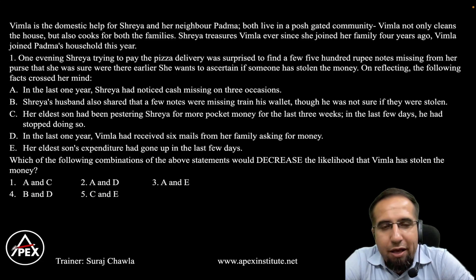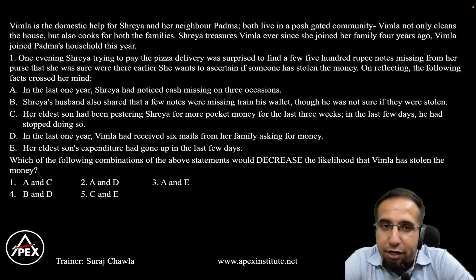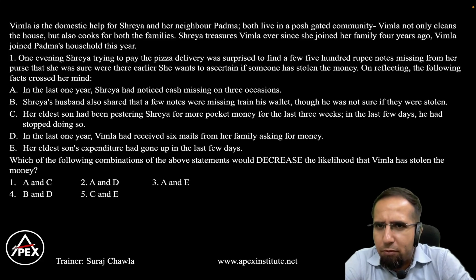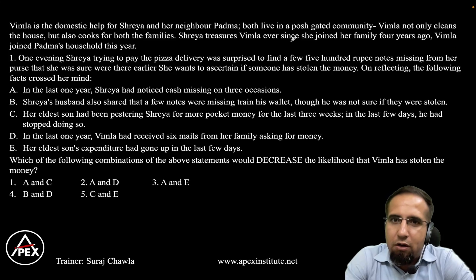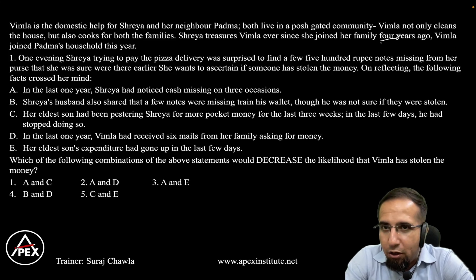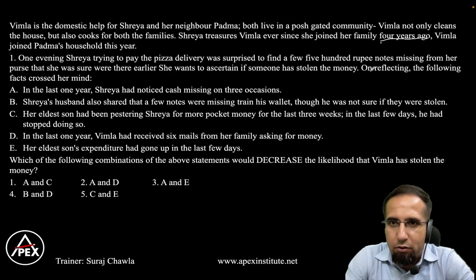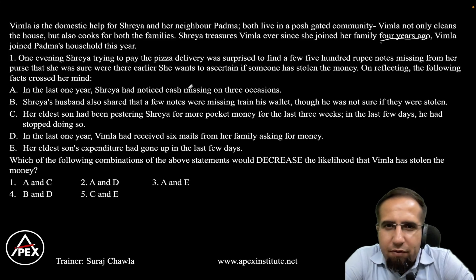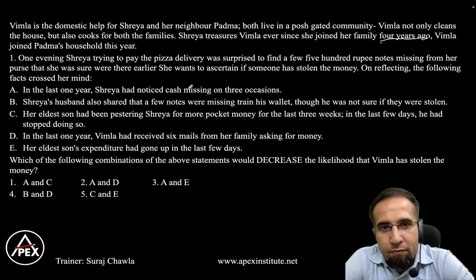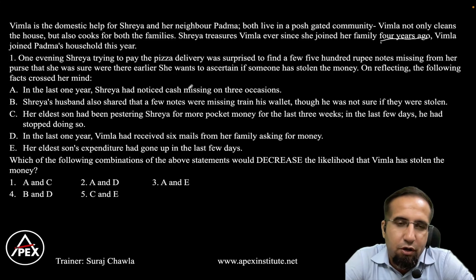This caselet talks about Vimla, who is a domestic help for Shreya and her neighbor Padma. Both live in a posh gated community. Vimla not only cleans the house but also cooks for both families. Shreya has treasured Vimla ever since she joined her family four years ago, while Vimla joined Padma's house this year. One evening Shreya was trying to pay a pizza delivery and was surprised to find that a few 500-rupee notes were missing from her purse. She wants to ascertain if someone has stolen the money.